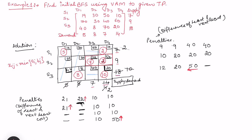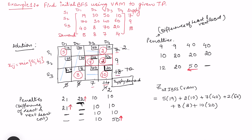This is a feasible solution obtained from Vogel's Approximation Method. To calculate the initial BFS value for Z, we simply multiply each allocation by its corresponding unit cost. For example, 5 units supplied at 19 rupees per unit cost, and so on for all allocations. This gives the initial value of Z. In the next video, you can watch more examples of Vogel's Approximation Method to find different cases.